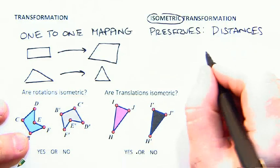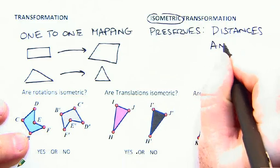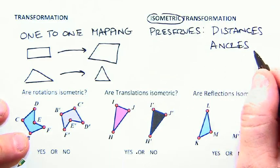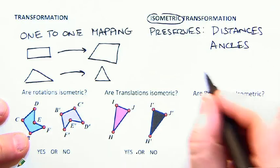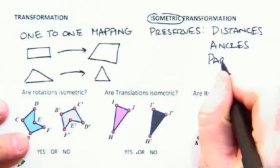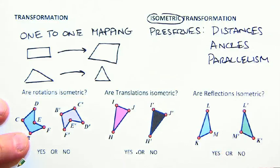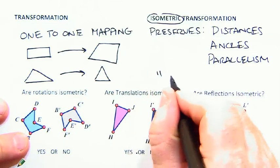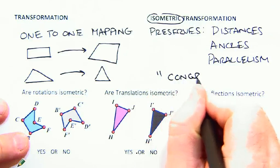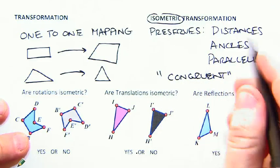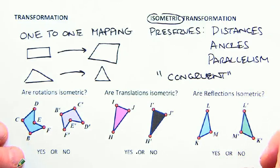It also preserves angle measures. So angles will maintain their size and will be identical. It preserves parallelism, which means that if things were parallel before, things are still parallel. Basically, isometric is a code word for one you probably already know or are familiar with: congruent. That's what it means to be isometric—it produces a congruent shape.